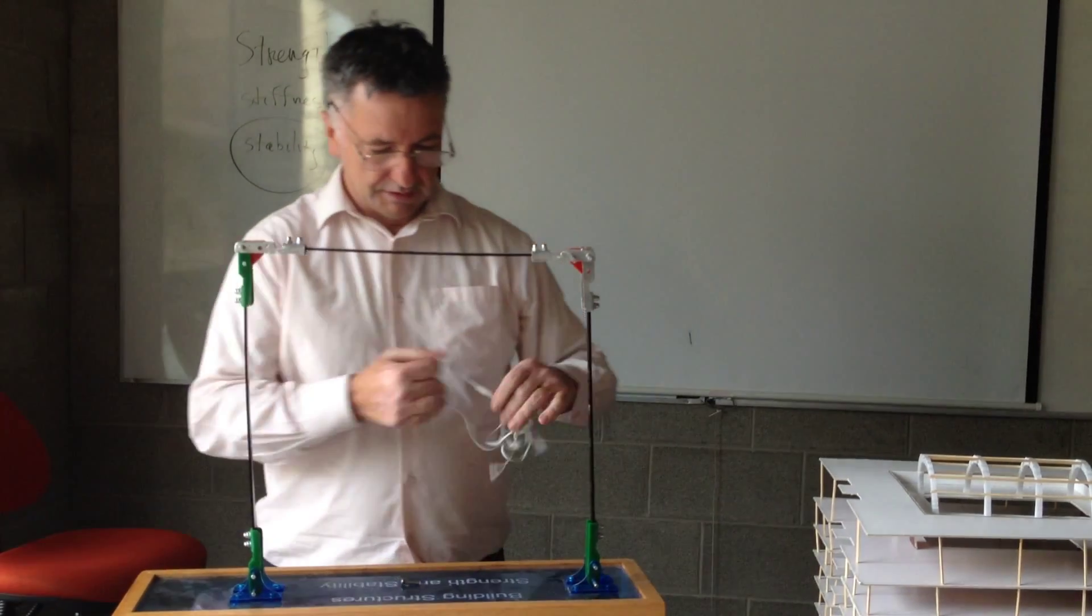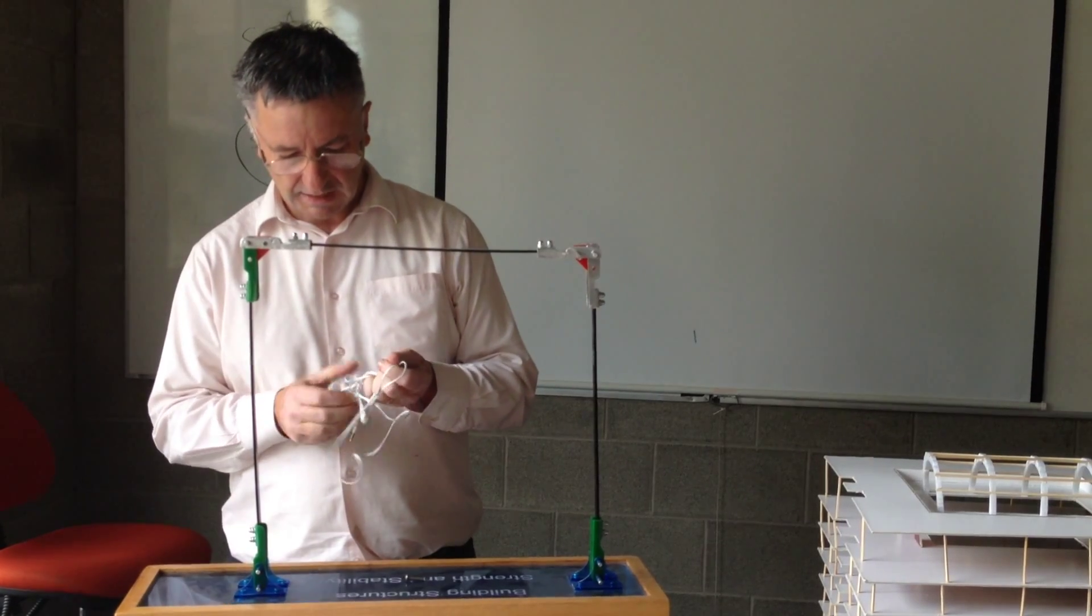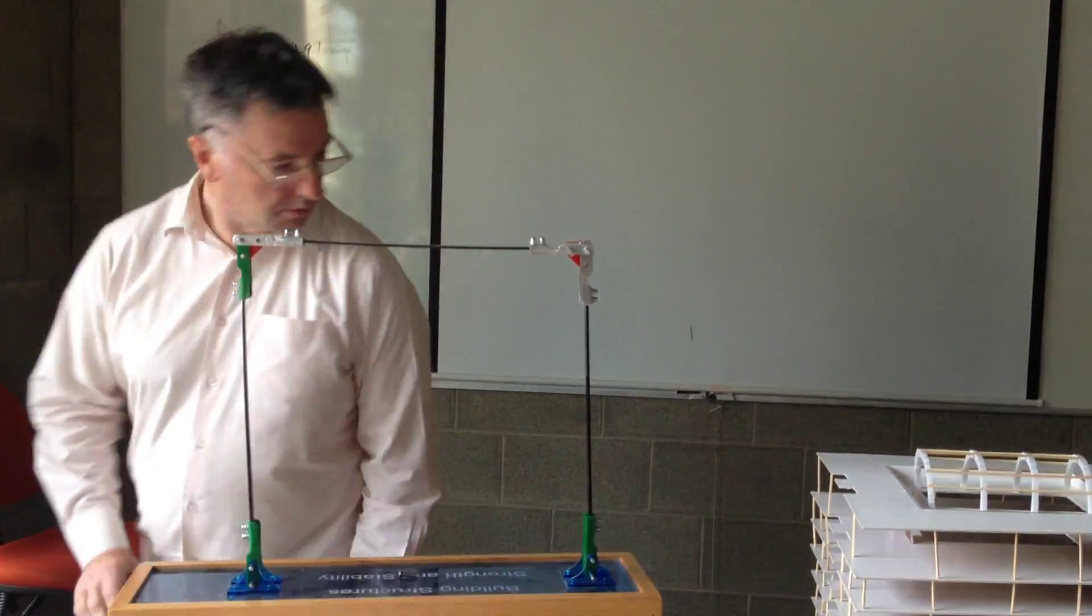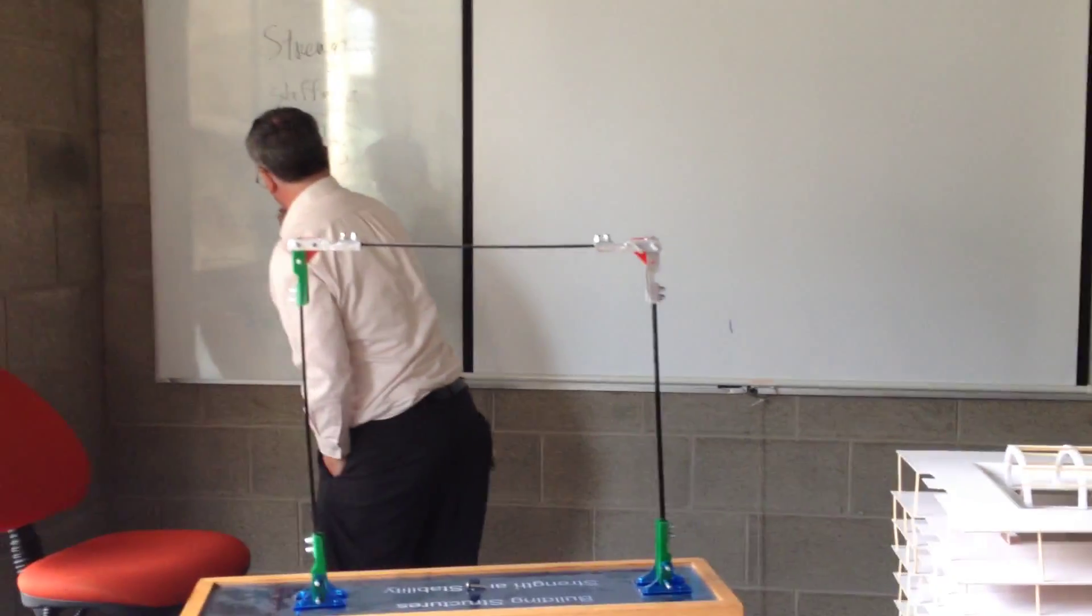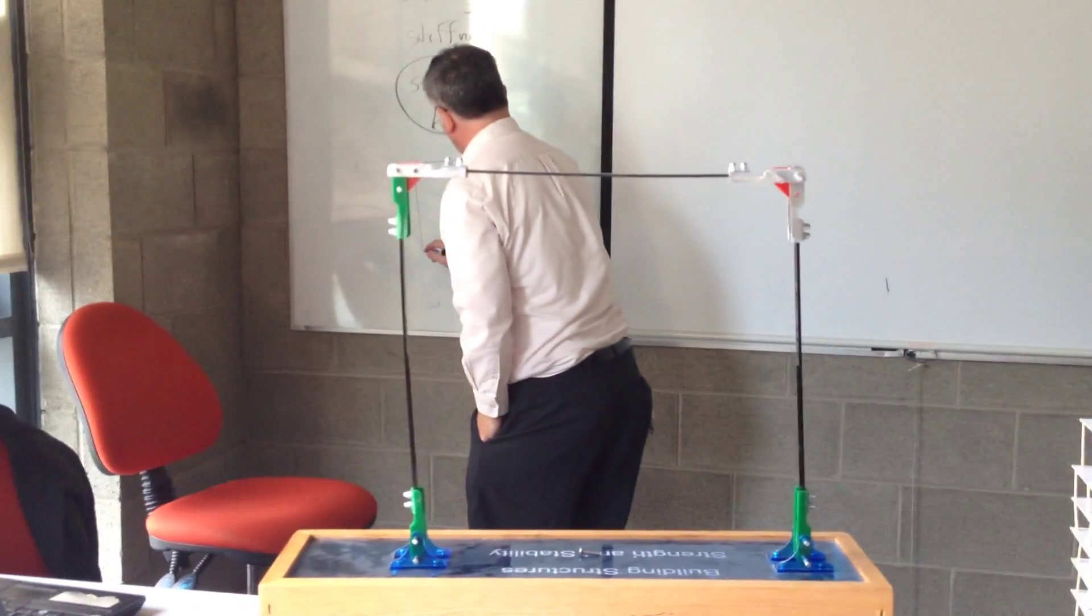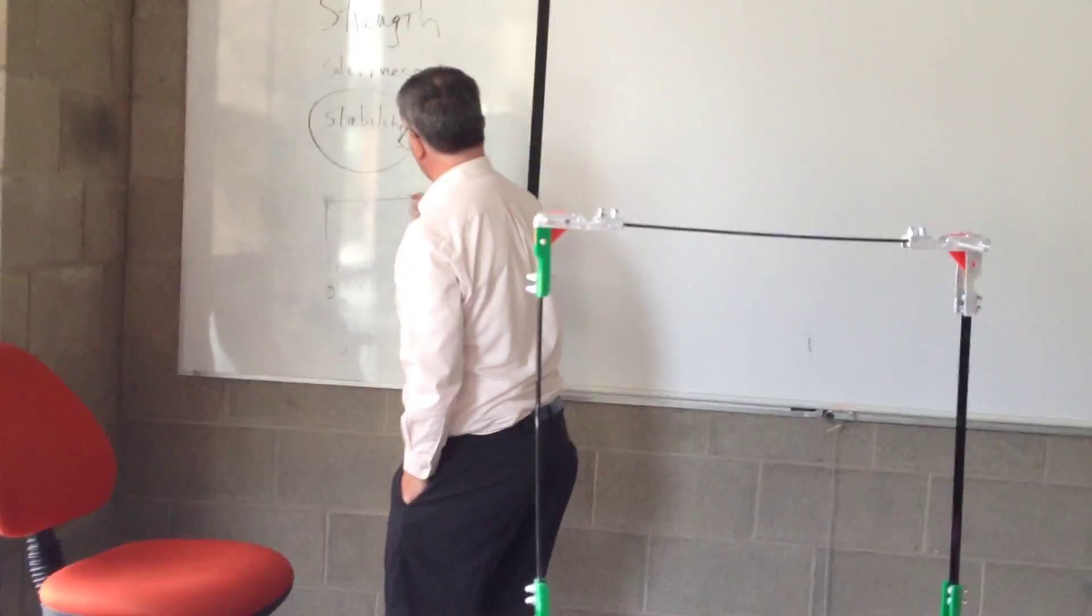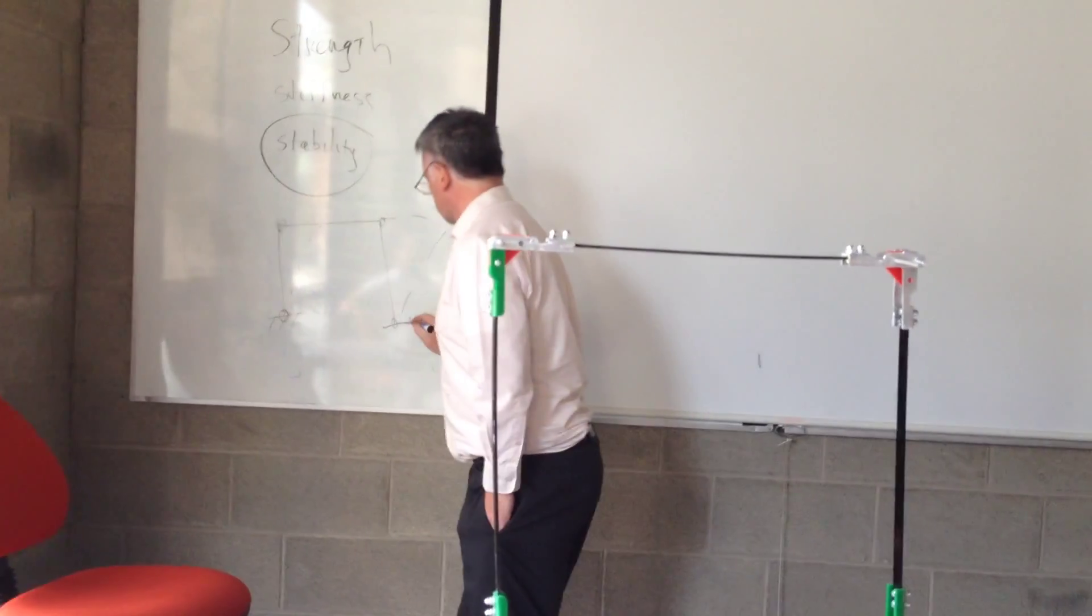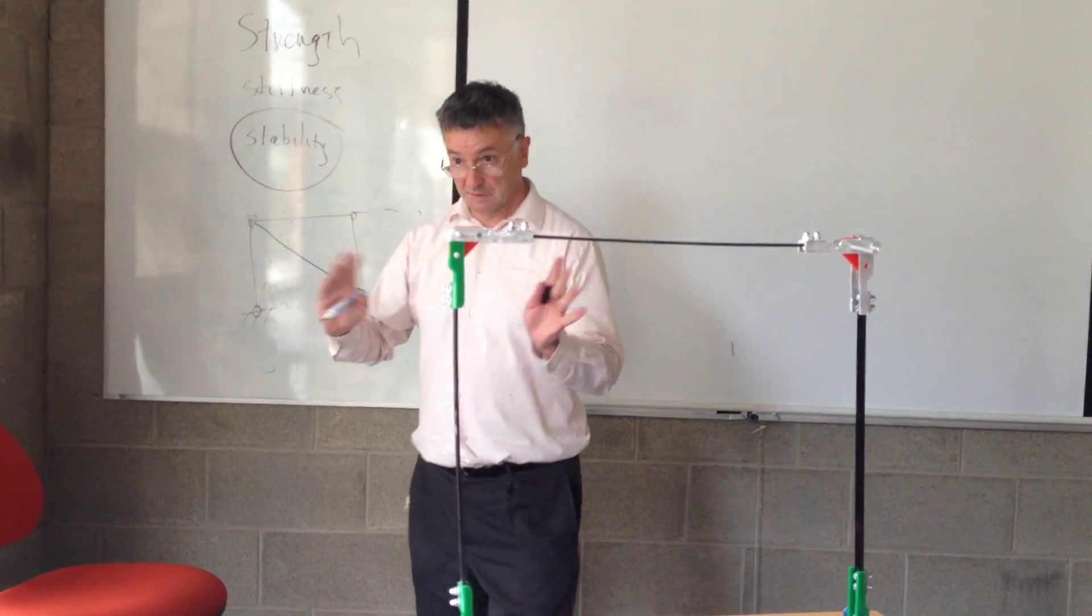The next way that you would stabilize this is you could tie the frame. So if this is a pin, and this is a pin, and this is a pin, and this is a pin, the whole frame is unstable. The frame is not stable. But if I tie it like that, now it becomes stable.